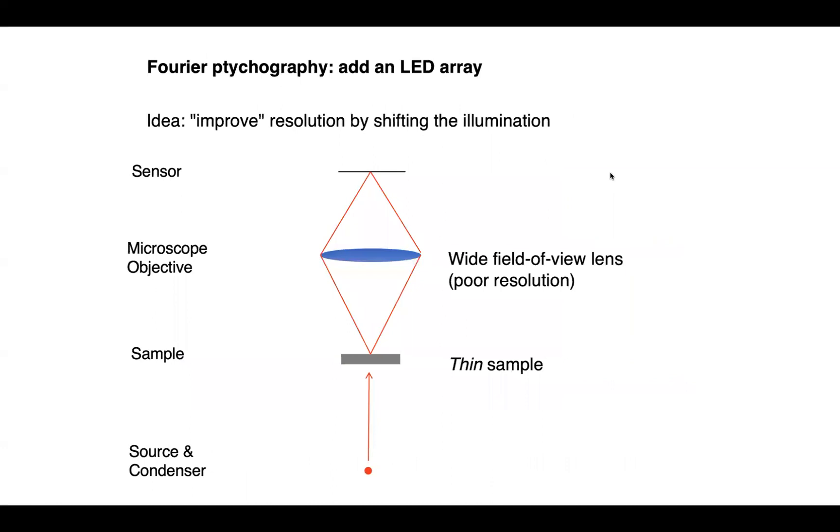To explain how Fourier ptychography works, it's best to start with a simple diagram. Here I'm showing a very simplified microscope. We have light from a source shining from below onto a sample. We'll assume the sample is a thin sample. We then have a microscope objective lens here shown very simply as a standard lens, and then a sensor up above which captures the image formed by that simple lens. We'll start off with a microscope objective lens that sits far away from the sample and captures a large field of view image so we can see a large area of the sample.